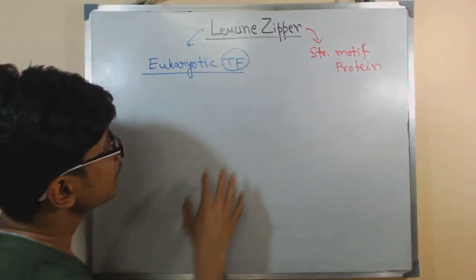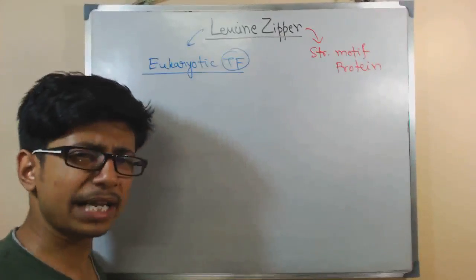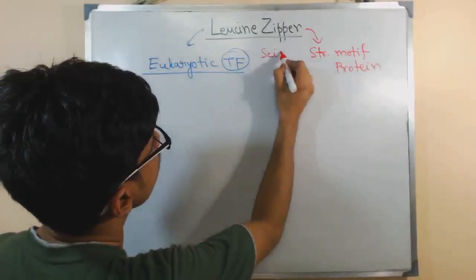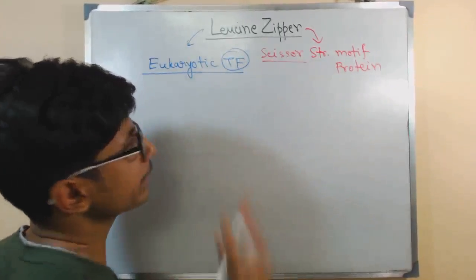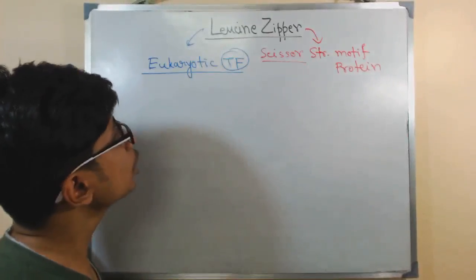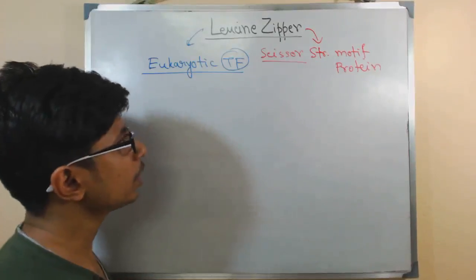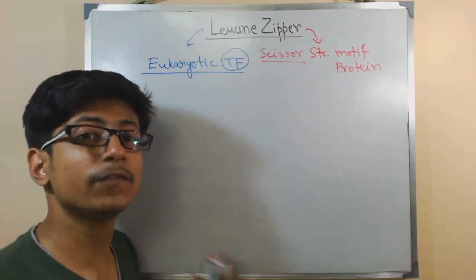But the thing here is, why is it called leucine zipper? It is also called leucine scissor. We will be looking at why it is called scissor also. Leucine zipper is simply a dimeric protein mainly - two monomers with two alpha helices.